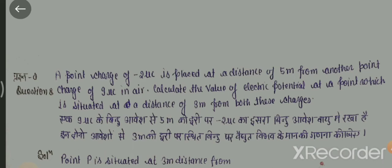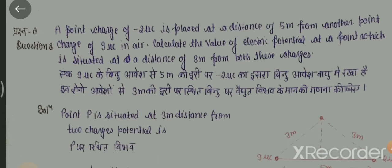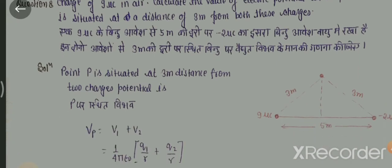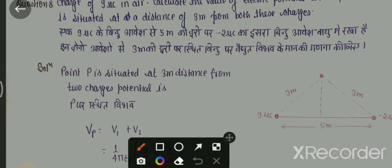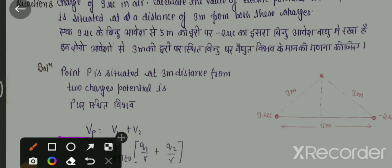9 microcoulomb के charge से 5 meter की दूरी पर minus 2 microcoulomb का charge रखा हुआ है। इन दोनों आवेशों से 3 meter की दूरी पर जो point है, उस पर हमें क्या ज्ञात करना है? वैद्युत विभव ज्ञात करना है। जैसा कि चित्र में देख पा रहे हैं, दो charge हैं — 9 microcoulomb और 2 microcoulomb। इनके बीच 5 meter का separation है, और दोनों से 3 meter की distance पर point P है। इस point P पर हमें electric potential find करना है।